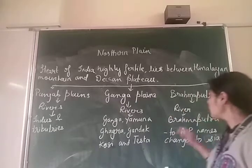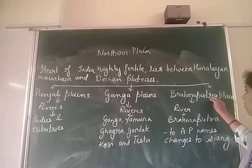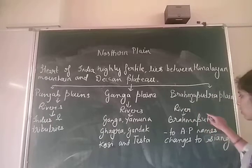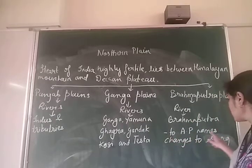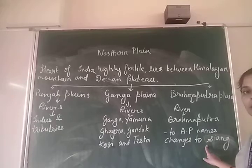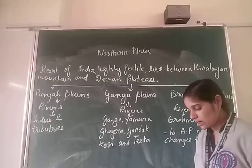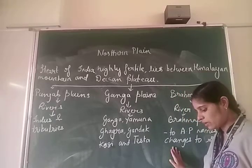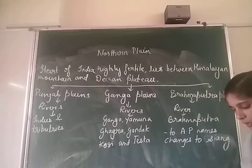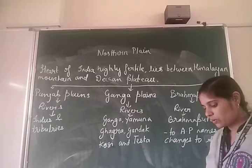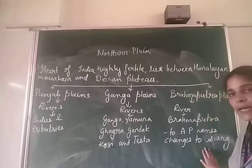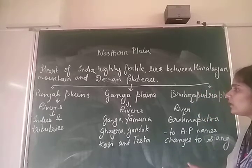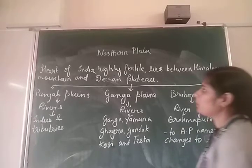Now we come to the Brahmaputra Plain. The main river is the Brahmaputra. When it moves to Arunachal Pradesh, the river name changes from Brahmaputra to Siang. This plain is rich in minerals like natural gas, petroleum, limestone, and coal. Majuli Island is the largest island in the Brahmaputra Plain.